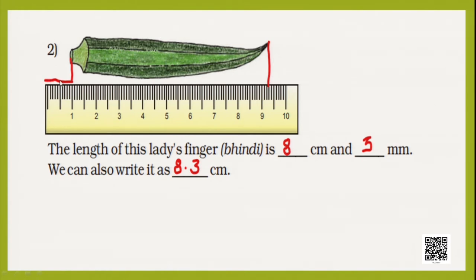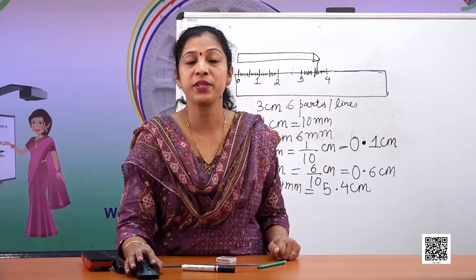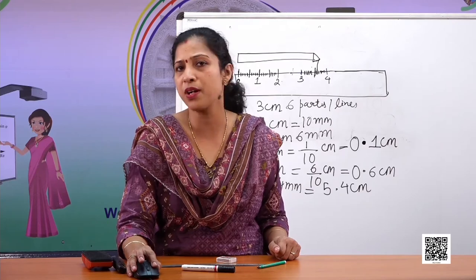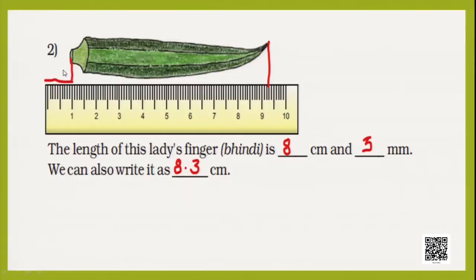But that one centimeter at the start was not part of the lady finger's length. So what do we do? We subtract that length because we are not starting from zero. Nine point three minus one centimeter equals 8.3 centimeters. That is the correct length.